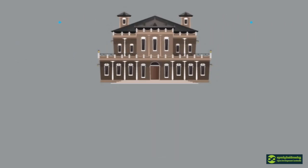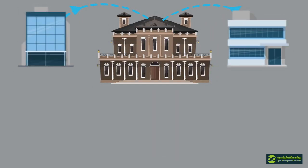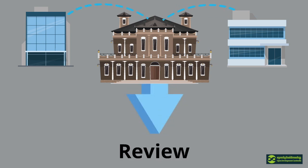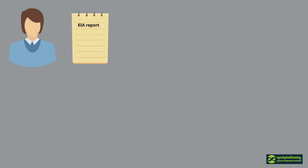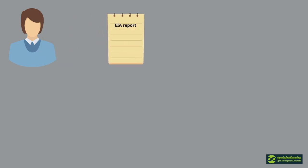The Ministry of Environment, together with other related ministries, is responsible for the review of EIAs. The review process works like this: first, an initial EIA and a project feasibility report have to be submitted by the project owner.